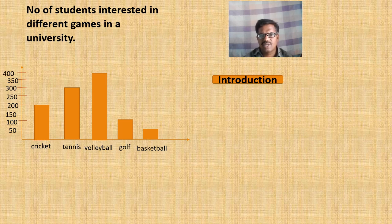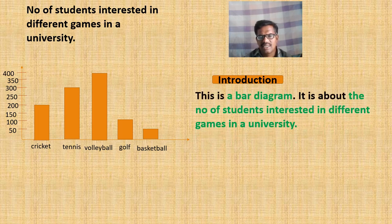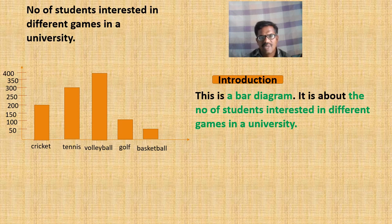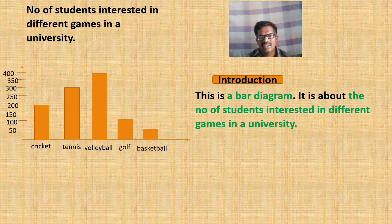First of all, let us make the students write the introduction. In the introduction there may be two sentences. The first sentence is what this diagram is called: 'This is a bar diagram.' The second sentence is what this diagram is about. The heading helps us here — it is about the number of students interested in different games in a university.